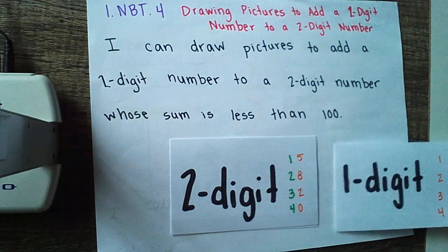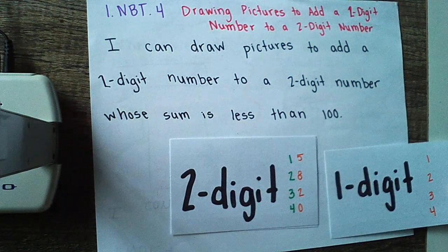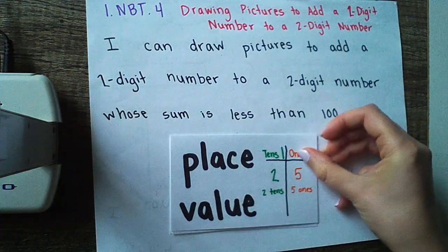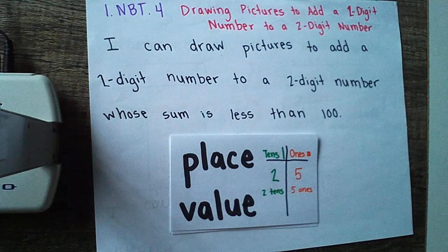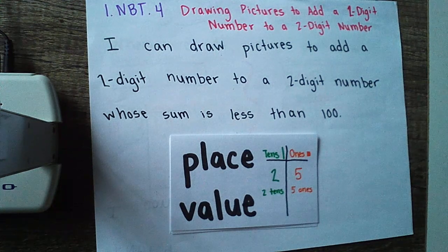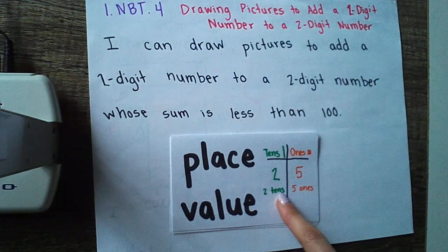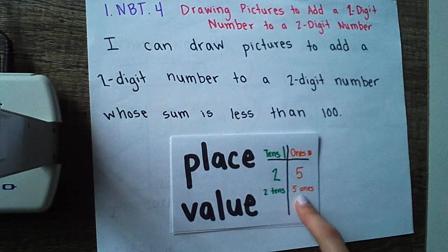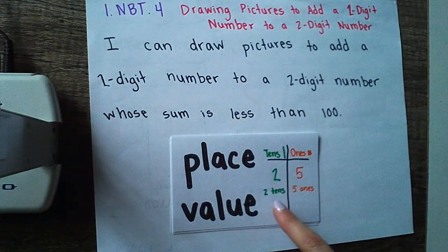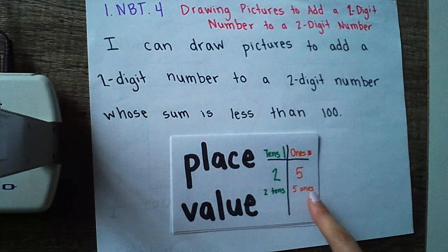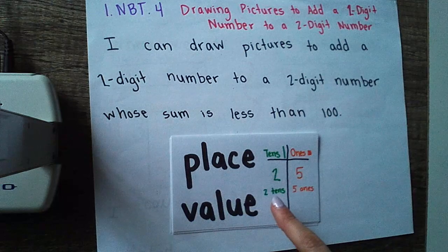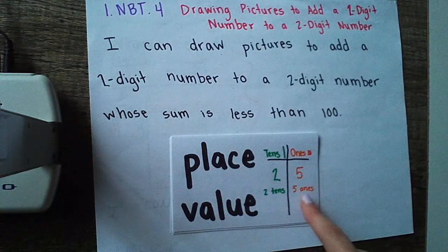Now that's different from a one digit number that only has a number in the ones place. As we are adding today we're going to use everything we know about place value. Place value tells us how much a number is worth depending on where it is. If a number is in the tens place that tells us how many groups of 10 we have. If it's in the ones place it tells us how many ones. For example, with the number 25 we know 25 is made of two tens and five ones. This two actually tells us two tens — not just two — two tens. The five is in the ones place, it tells us we have five ones.